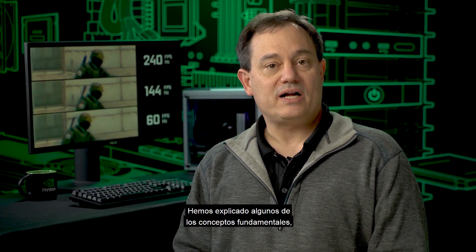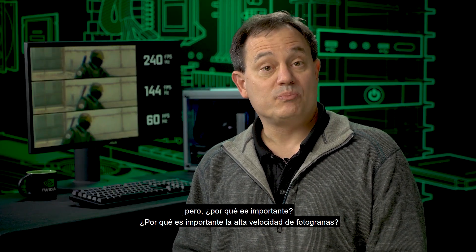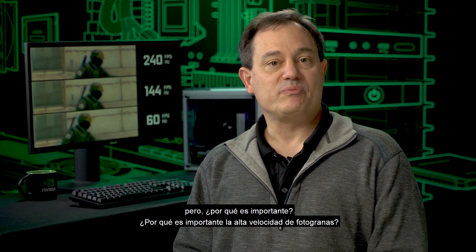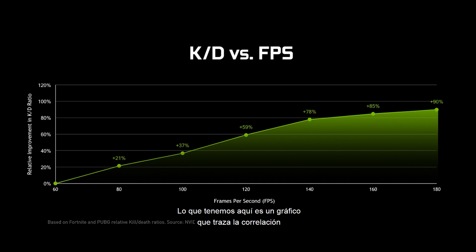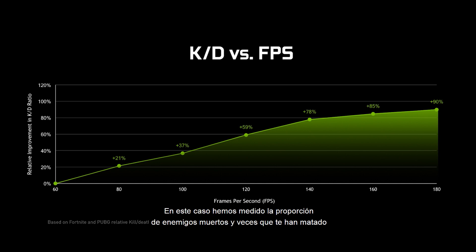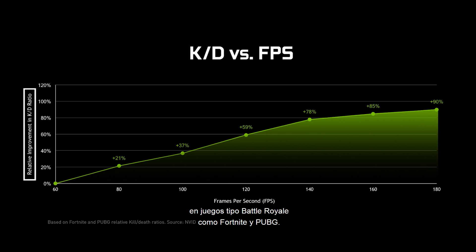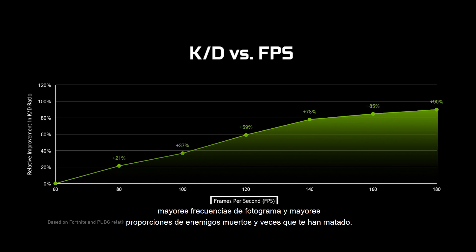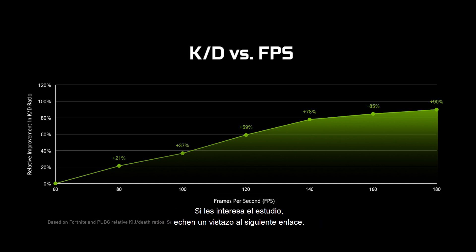So we've explained some of the fundamental concepts, but why does high frame rate matter? What we have here is a chart that plots the correlation between high frame rate and success in a first-person shooter. We measured kill-death ratios in battle royale games like Fortnite and PUBG, and as you can see, there's a correlation between higher frame rates and higher kill-death ratios. If you're interested in the study, please check out the link below.